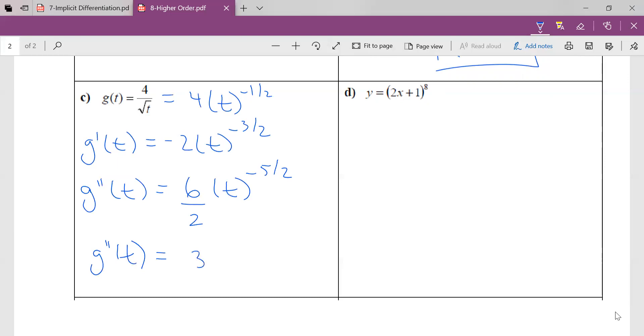So g double prime at t, well, that's 3. And then I'm going to rewrite that as either just a positive exponent like that, or I would rewrite it like that. Same, same, but different. They're the same thing.